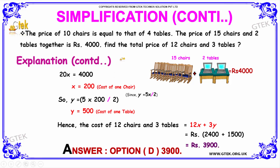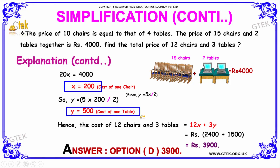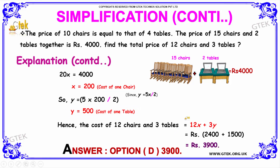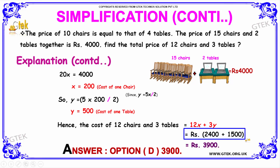Since the question asks for the total price of 12 chairs and 3 tables, and we found the cost of 1 chair X equal to 200 and 1 table Y equal to 500, we substitute in 12X plus 3Y. That gives 12 times 200 plus 3 times 500, which equals 2,400 plus 1,500, which implies 3,900. Therefore, the total price of 12 chairs and 3 tables is Rs. 3900.